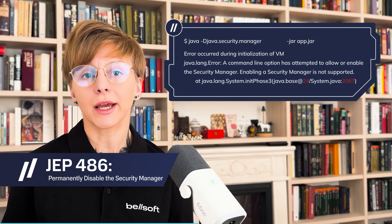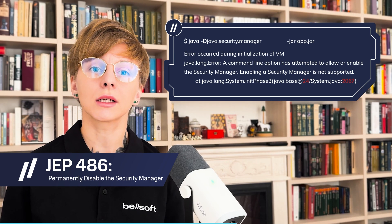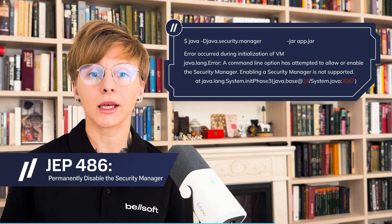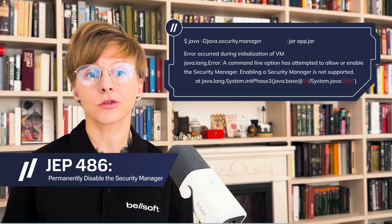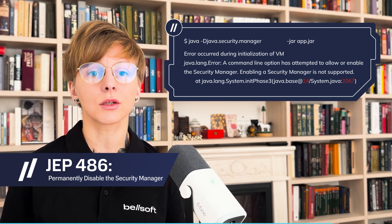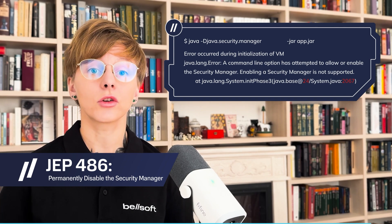JEP 486 permanently disables the Security Manager API, which has been around since the first Java version. It was rarely implemented due to the complexity of its use, but library developers had to dedicate time and resources to maintain compatibility with the feature, so it was decided to remove it.